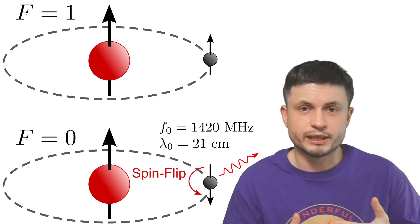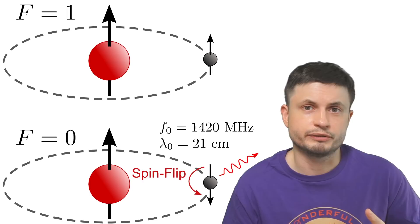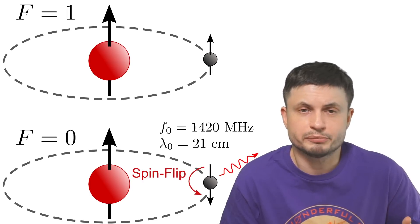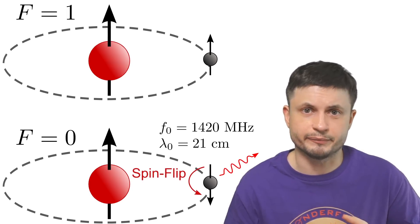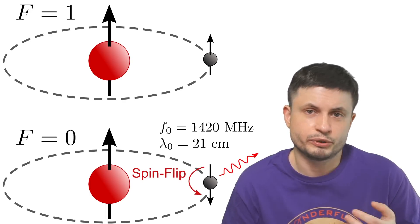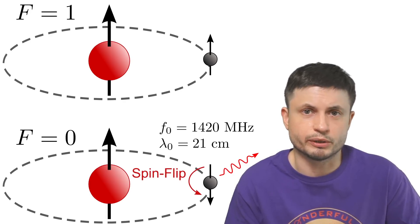This can be actually seen from everywhere and can even be detected using amateur astronomy tools. For example, it can actually be detected using a relatively powerful Wi-Fi antenna. And it has been done in the past where you can actually find really large clouds around the galaxy.